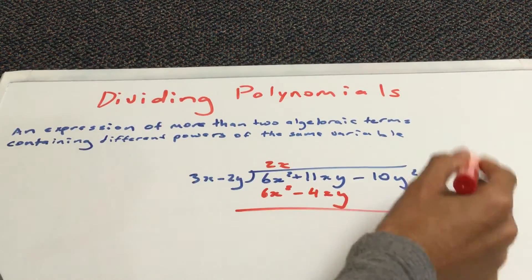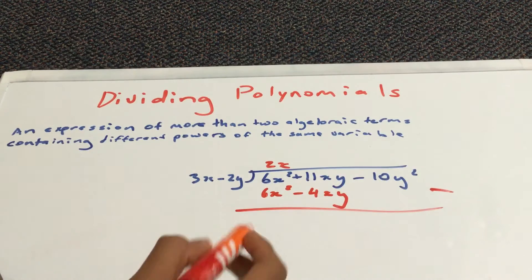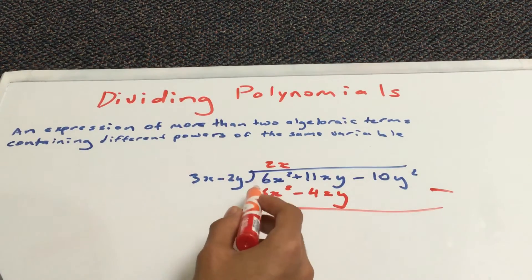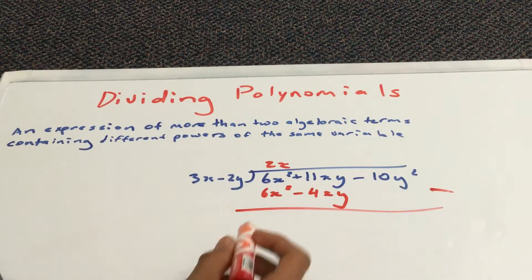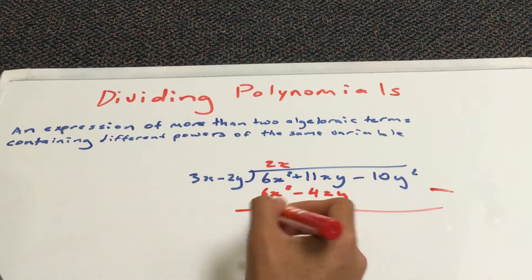And now, you have to subtract. So, you just subtract this by this. And 6x squared minus 6x squared gives you 0. So, you don't need to write anything.